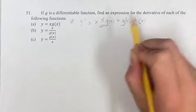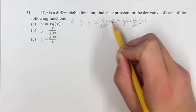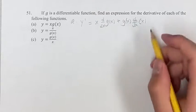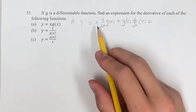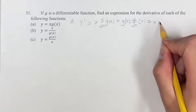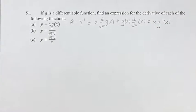So it's the product rule, you have one times the derivative of the other plus the other times the derivative of the first. So we have x, the derivative of g of x, we're just going to write as the derivative of g of x, g prime of x,